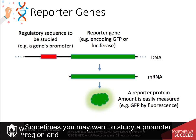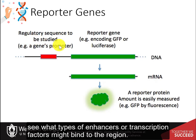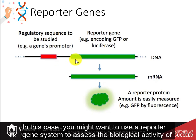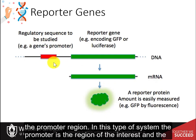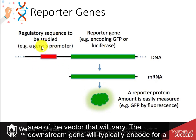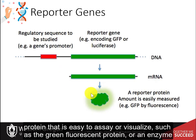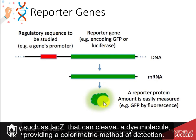Sometimes you may want to study a promoter region and see what types of enhancers or transcription factors might bind to the region. In this case, you might want to use a reporter gene system to assess the biological activity of the promoter region. In this type of system, the promoter is the region of interest and the area of the vector that will vary. The downstream gene will typically encode for a protein that is easy to assay or visualize, such as the green fluorescent protein, or an enzyme such as lacZ, that can cleave a dye molecule, providing a colorimetric method of detection.